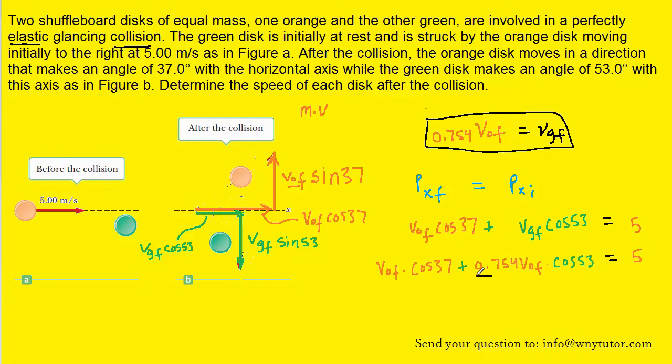Now you can pick up your calculator and multiply 0.754 by cosine of 53, and you should get 0.454, so we can actually rewrite this block of terms here as just 0.454 VOF. The cosine of 37 is approximately 0.799, so we can rewrite this term as 0.799 VOF. And then of course we can add these like terms. We get approximately 1.25 VOF is equal to 5, and then nicely we can divide both sides by 1.25 to solve for VOF.